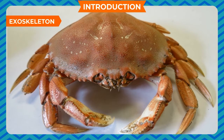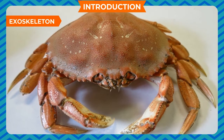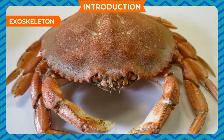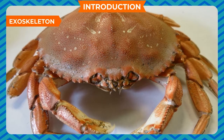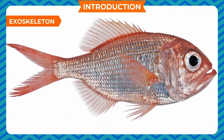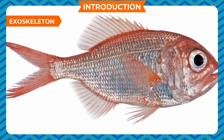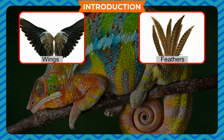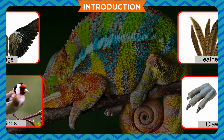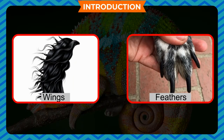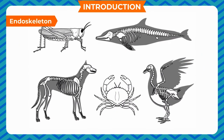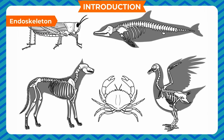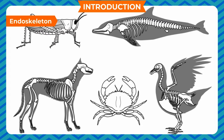Exoskeleton: The skeleton present on the body surface is called exoskeleton. It is formed of non-living substances. It occurs in the form of scales in fish, epidermal scales and long scales in reptiles, wings, feathers and claws in birds, and hairs and nails in mammals.